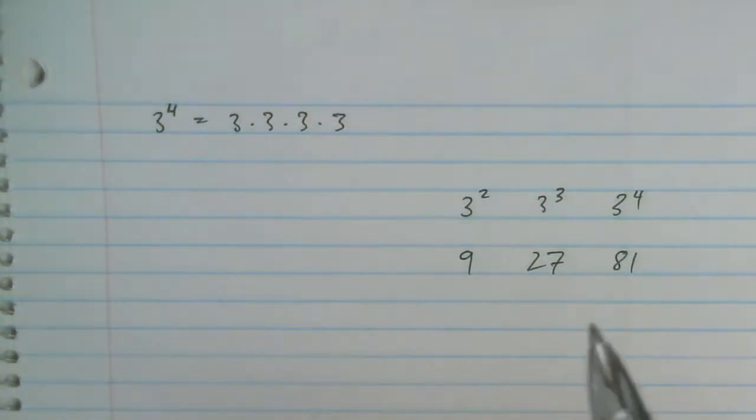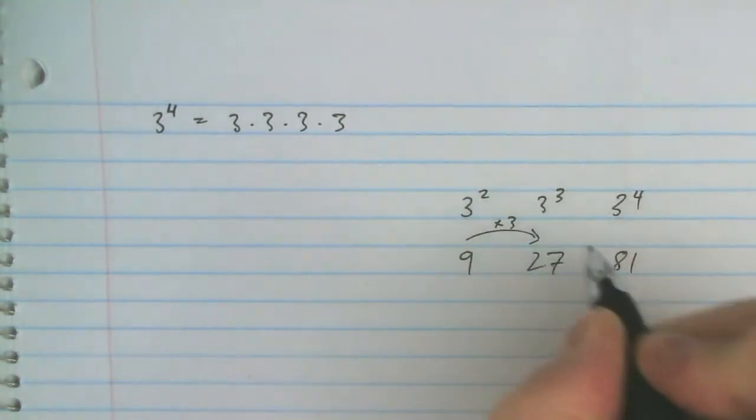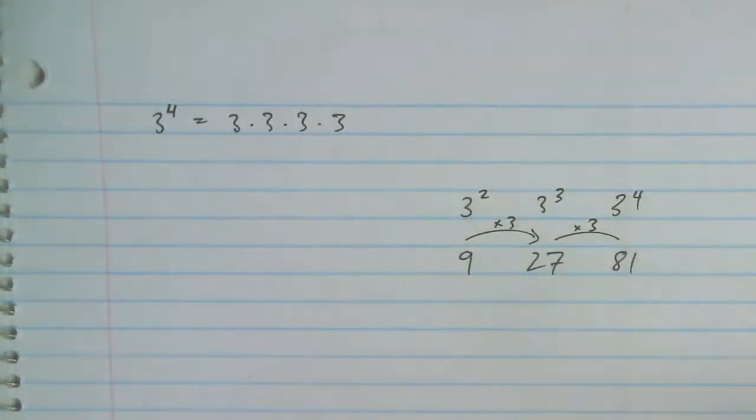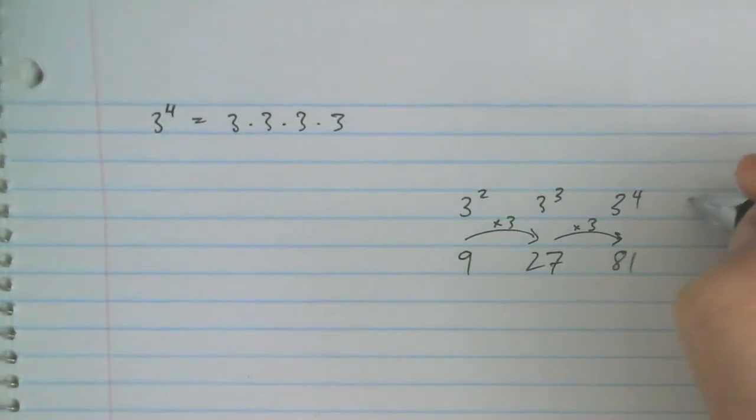The pattern is that we're multiplying by 3 each time. So if we continue again, we'll multiply by 3 and get 243.